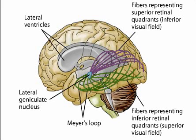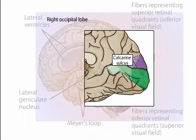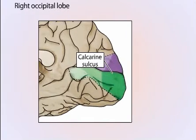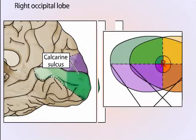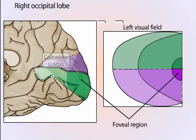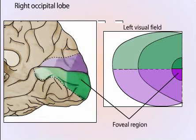The topographic order of visual information is maintained in the visual cortex. The fovea is represented in the posterior part of the visual cortex, whereas more peripheral regions of the retina are represented in progressively more anterior regions. Note that the area of central vision — the fovea — is represented over an especially large part of the visual cortex.